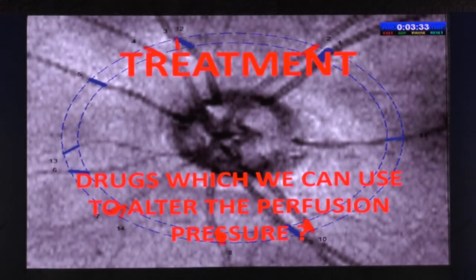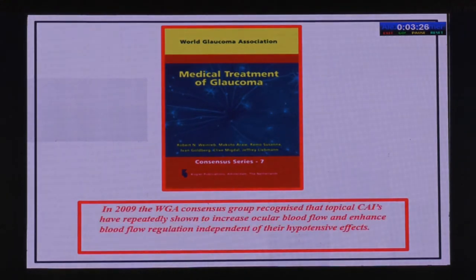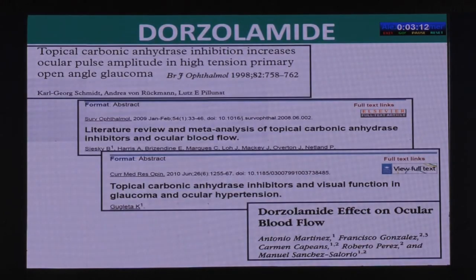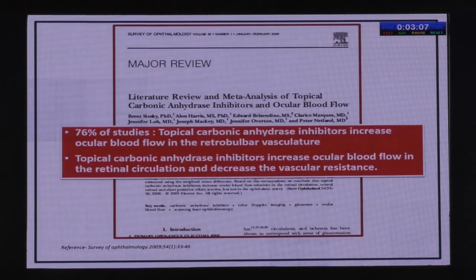Has this affected treatment? Yes. Consensus Series 7, from 2009, recognized that topical carbonic anhydrase inhibitors have repeatedly shown to increase ocular blood flow and enhance blood flow regulation independent of their hypotensive effect — that independence is the key point. A major review shows that 76% of studies proved that CAIs increase ocular blood flow in the retrobulbar vasculature.